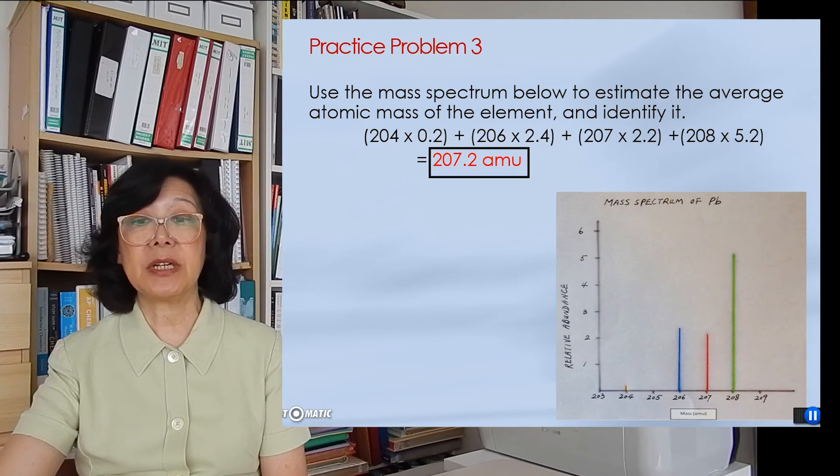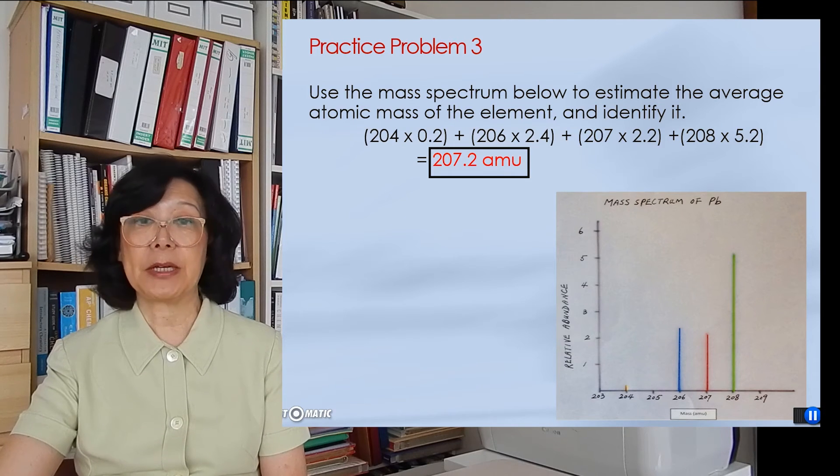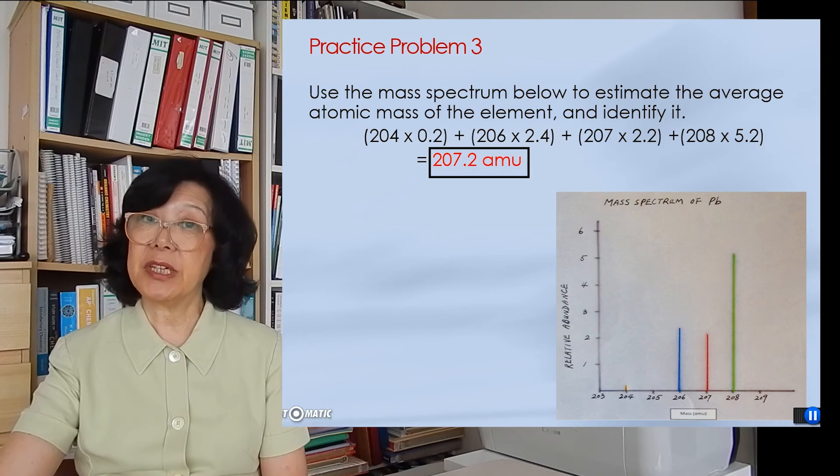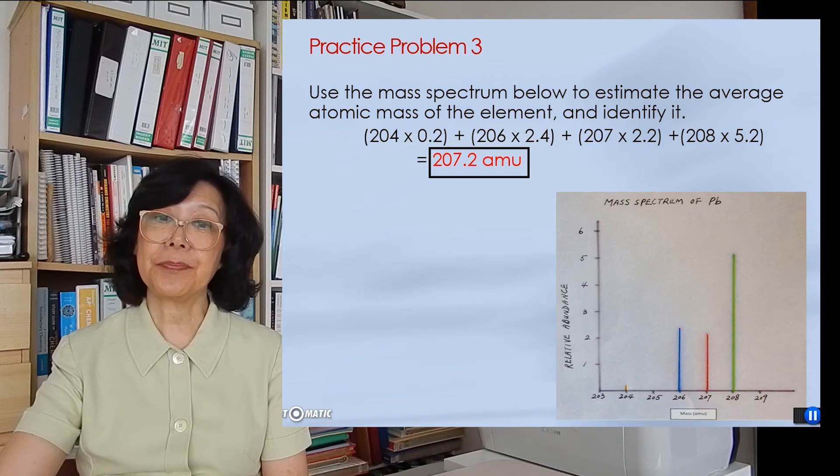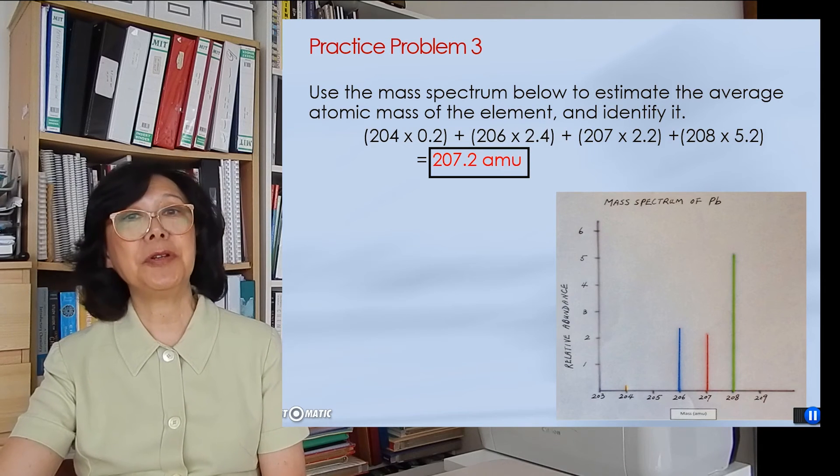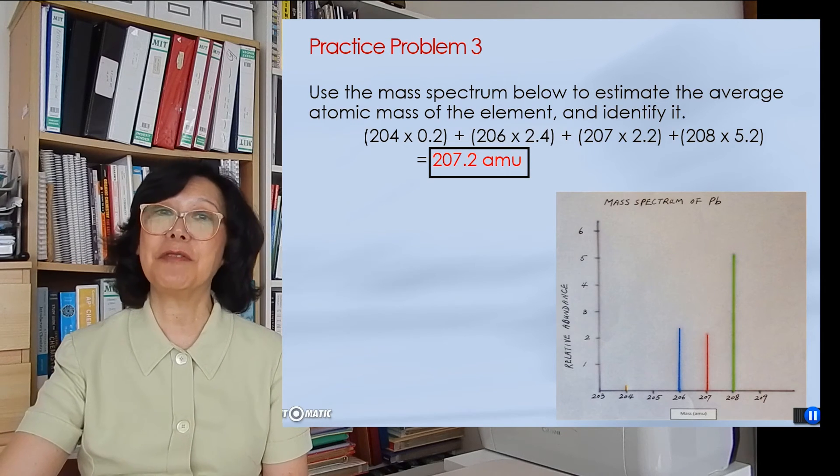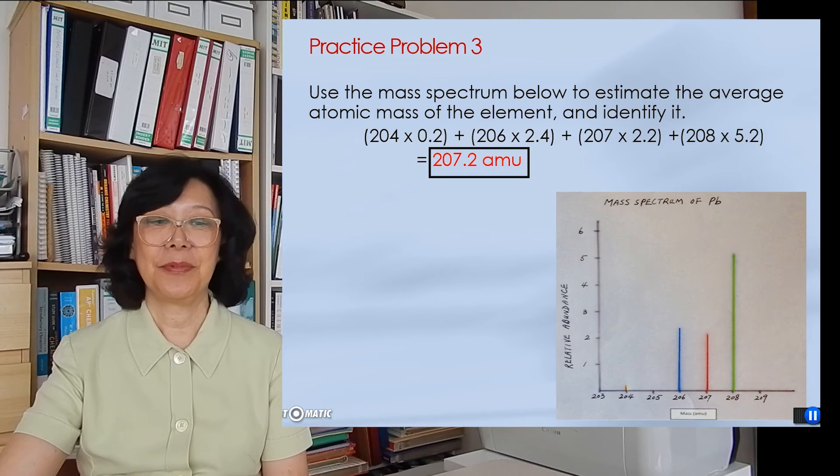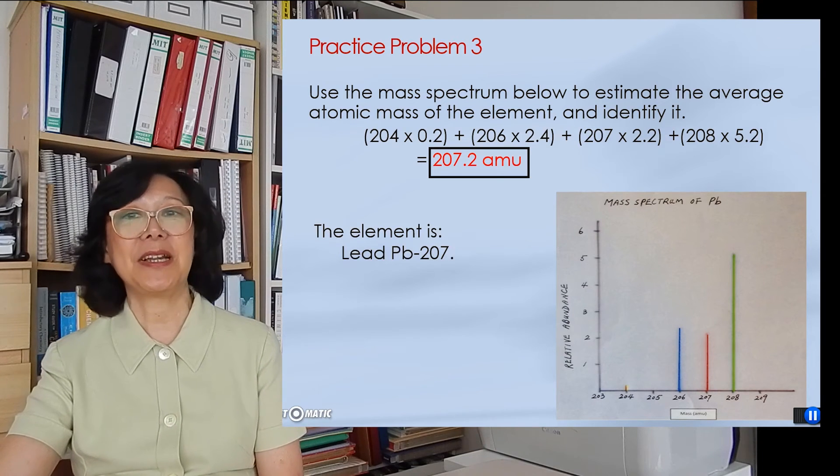We arrive at 207.2 amu. I hope by now you would know what the element is if you check with your periodic table. Sure enough, it's lead 207.